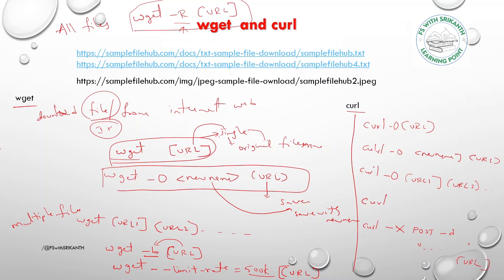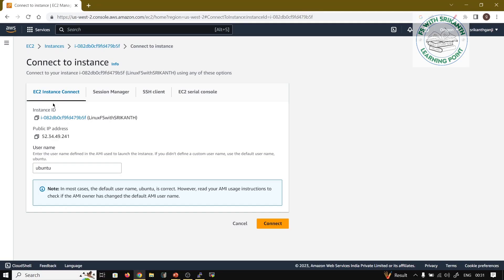In real time, employees in MNCs prefer to use wget because it is very user friendly. Curl follows very strict syntax. If there is any error, curl shows detailed error information, while wget is more flexible to users.